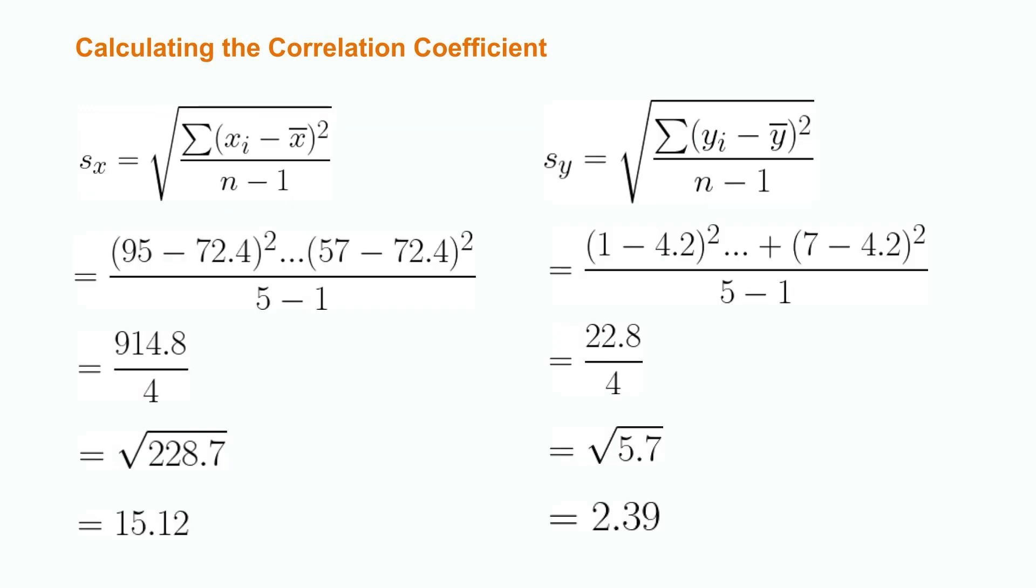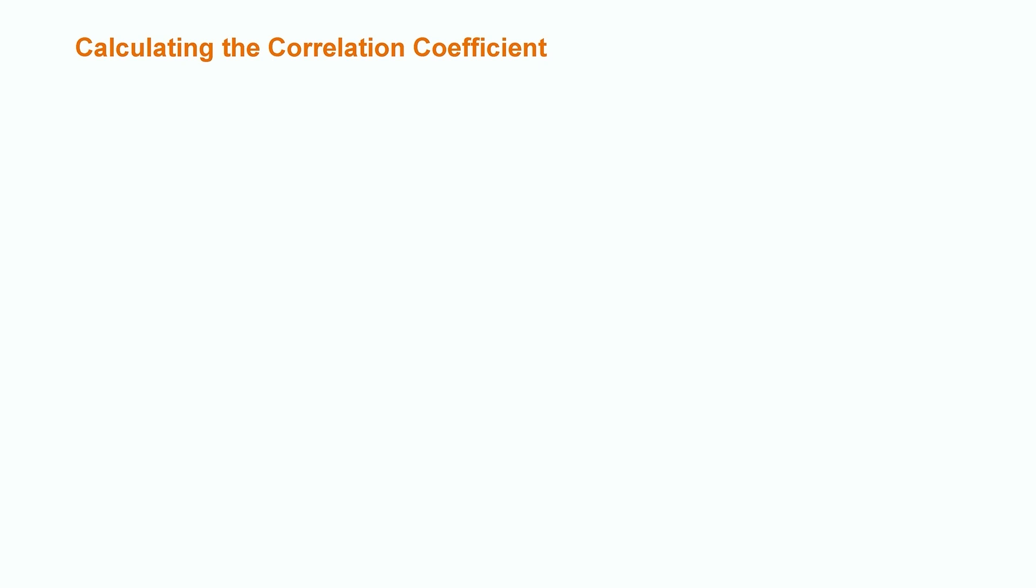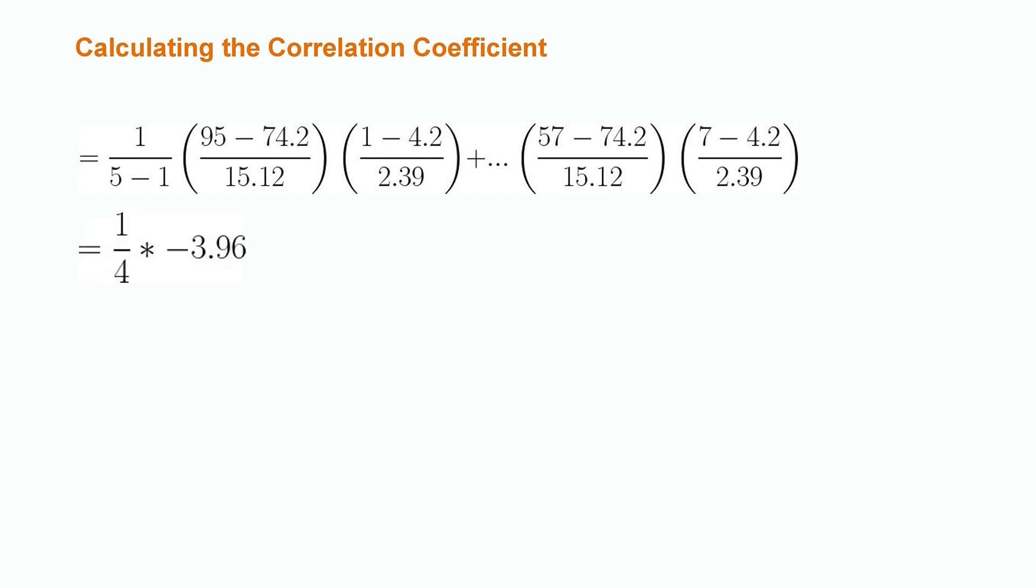We now must compute the standard deviation of x and y. We do this by subtracting each value of x from the mean and squaring that value and then summing the results. We then divide by n minus 1 and take the square root of that result. We do the same process for y. We now must multiply each value of x minus the mean of x divided by the standard deviation of x by each value of y minus the mean of y divided by the standard deviation of y. We then multiply by 1 over 5 minus 1. This gives us a value of 1 over 4 times negative 3.96. This results in a correlation coefficient of negative 0.99.